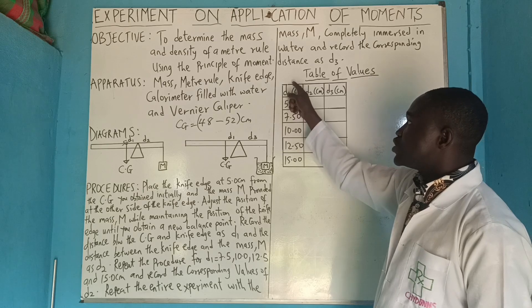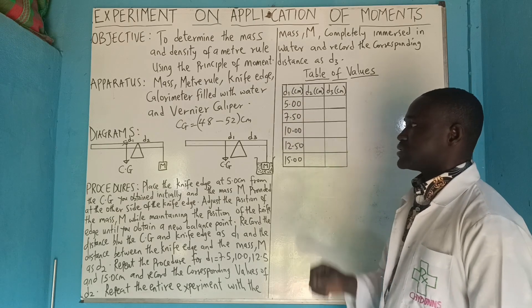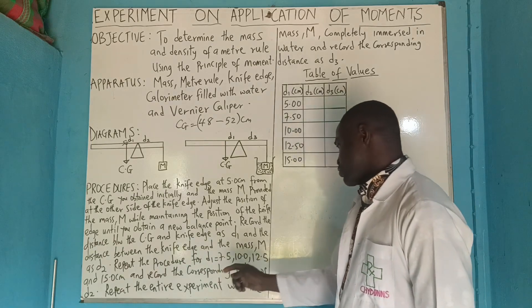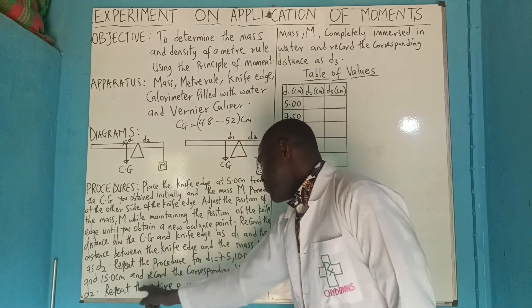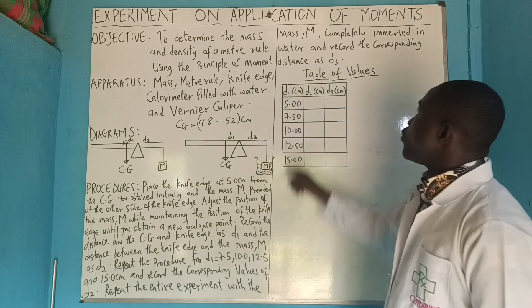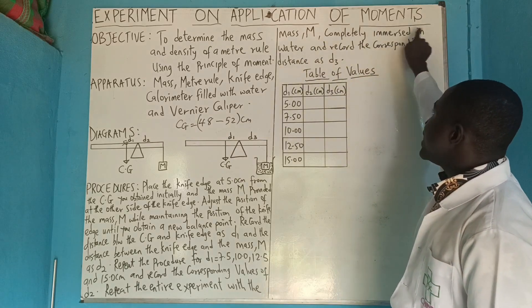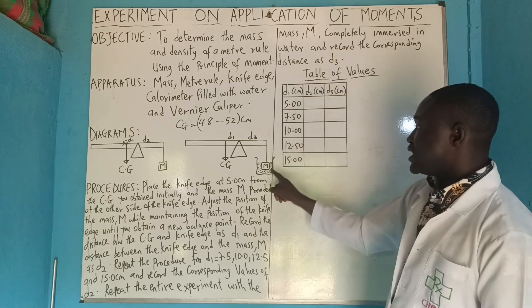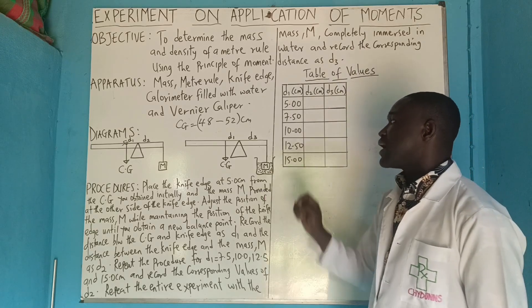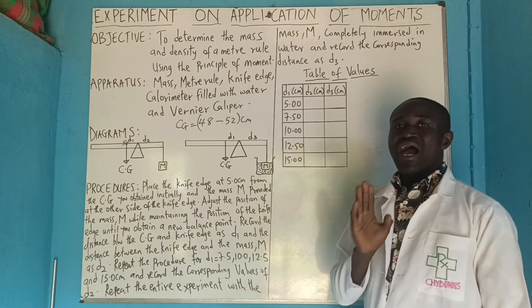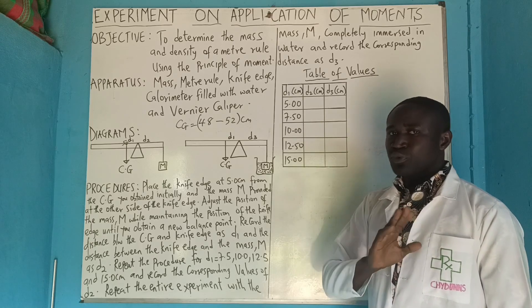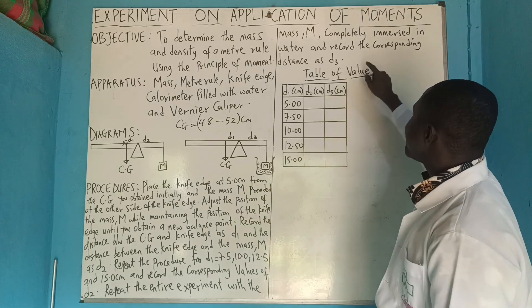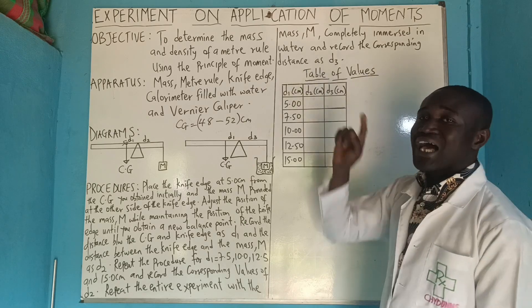You repeat the procedure for d1 equal to 7.5, 10.0, and 12.5 cm. Then repeat the entire experiment with the mass M completely immersed in water. When immersing in water, we have to talk about density, thrust, and related concepts. Record the corresponding distance as d3.